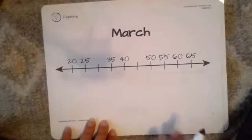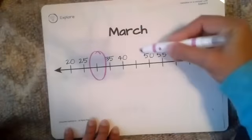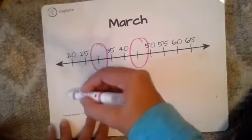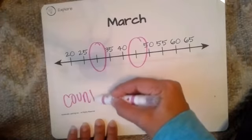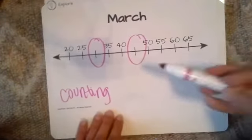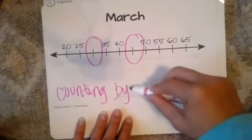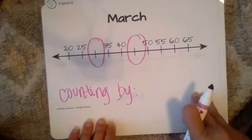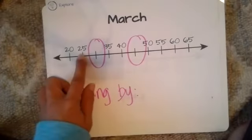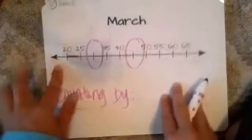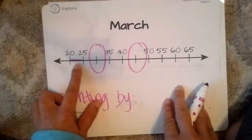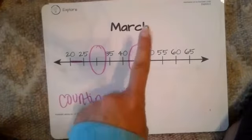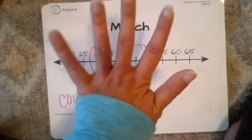Let's do a couple more examples. We're going to move now into March. Let's circle our missing numbers first. I see two missing numbers, and I'm going to write what they're counting by at the bottom of the number line — I want y'all to do that as well. So let's look: 20, 25. What is the distance between each of these points? So 20, 21, 22, 23, 24, 25.